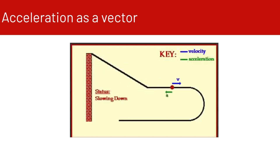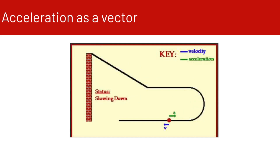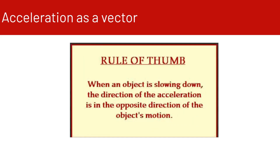You can see the velocity vectors were in the same direction, and now they're in opposite directions as it slows down. The rule of thumb: when an object is slowing down, the direction of the acceleration is in the opposite direction of the object's motion.